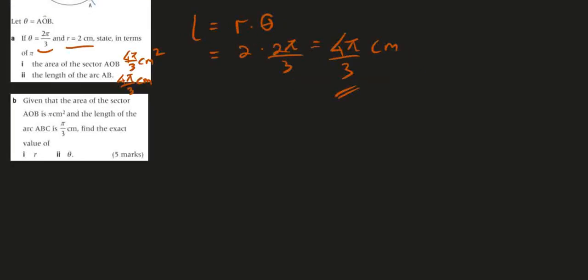Now let's go to part B. Part B says that given the area of sector AOB is π cm², and the length of arc is equal to π/3 cm. Now part A we have to find the radius, and part B to find theta. We still use the same formula: area equals half R² times theta, while length of arc equals R times theta.